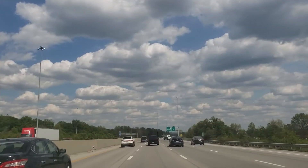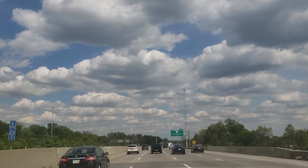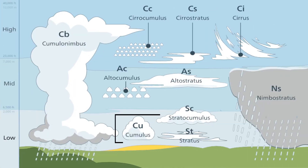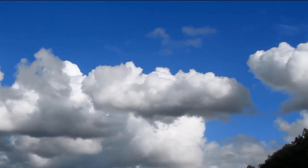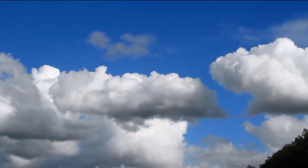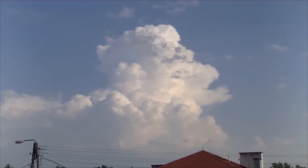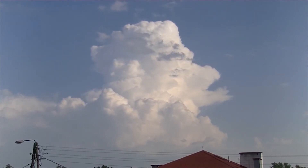Cumulus clouds are typically puffy like a cotton ball with a flat, dark base. They occur at lower levels between 1,000 and 7,000 feet. They can appear both clustered or isolated and come in many different forms. They form when isolated pockets of warm air are heated by the Earth's surface and begin to rise and condense. The process of condensation releases energy in the form of latent heat, which heats the air, causing it to rise further, creating a feedback loop — part of the reason why cumulus clouds can explode into cumulonimbus clouds.